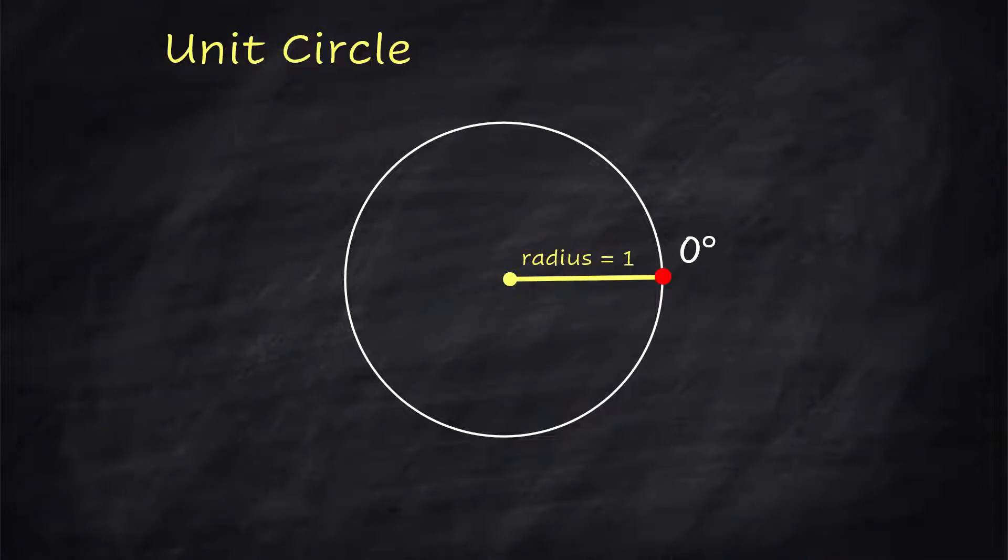Here's the first one: 0 degrees. Now let's go halfway around the circle. Well, that makes a straight line, so that's 180 degrees.